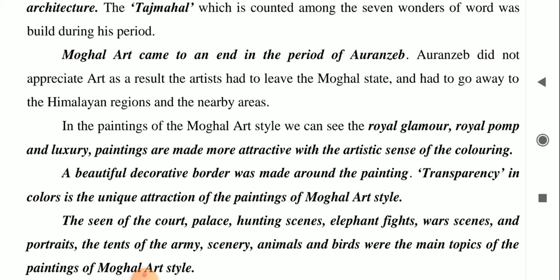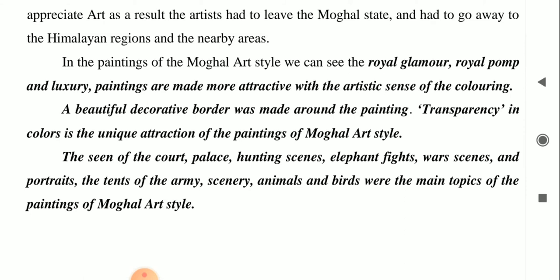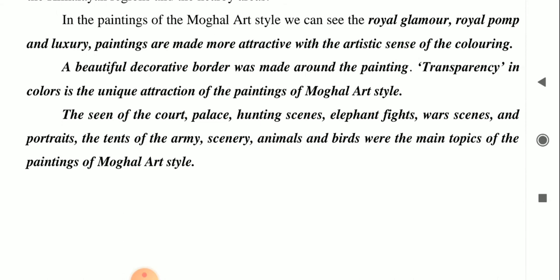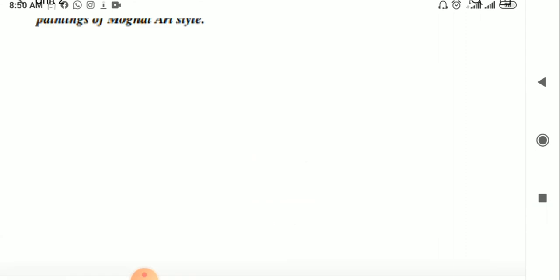Aurangzeb did not appreciate art, and as a result the artists had to leave the Mughal state and settle down elsewhere. Many of them went to the Himalayan ranges and nearby areas. In the paintings of Mughal art we can see royal glamour, royal pomp, and luxury. Paintings are made more attractive with artistic colouring and a beautiful decorative border around the painting. Transparency in colours is the unique attraction of Mughal art. Scenes of courts, palaces, hunting, elephant fights, war, portraits, army scenes, animals, and birds were the main topics.